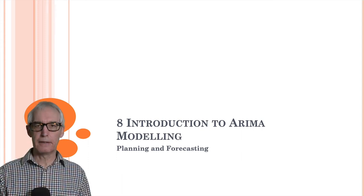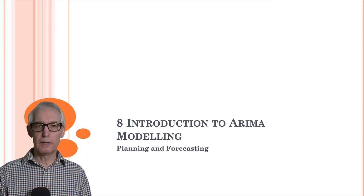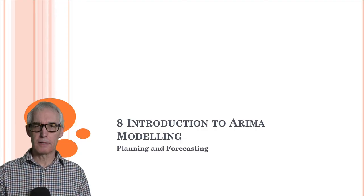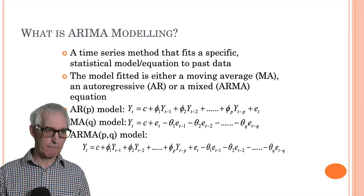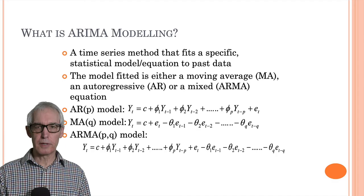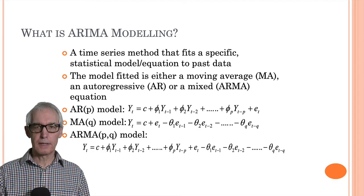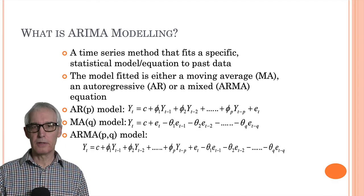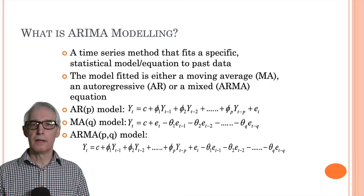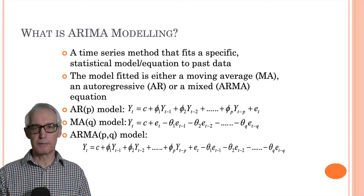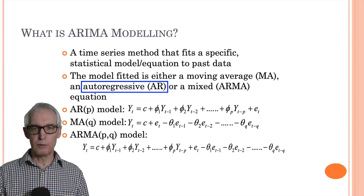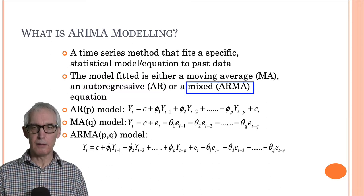Hi, Bob Beachle here. In this video we'll be looking at ARIMA modeling. ARIMA is a time series method where you only need data on the variable you're trying to forecast, and it fits a specific statistical model or equation to that data. The models fitted can be of three types: a moving average model, an autoregressive model, or a mixture of the two — an autoregressive moving average, or ARMA model.